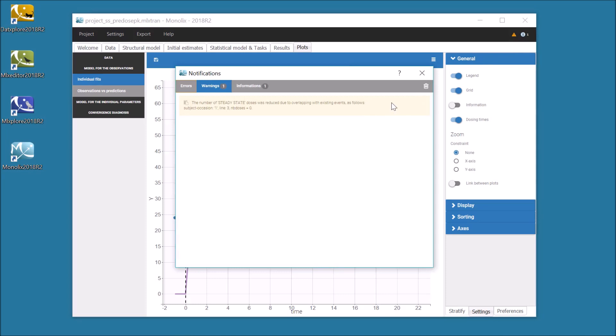So as indicated in this warning message that appears after loading the data, the multiple doses taken at home before the visit to the hospital and encoded as previously with steady state at time 0, are actually not added. This would be the case even if the line corresponding to this observation was ignored in the dataset.